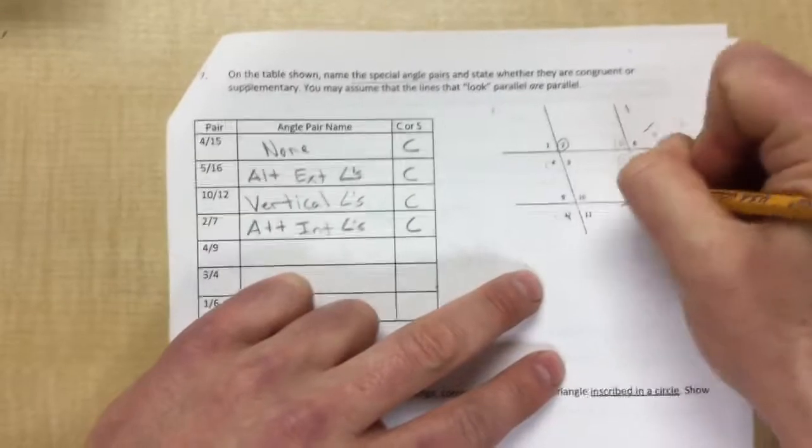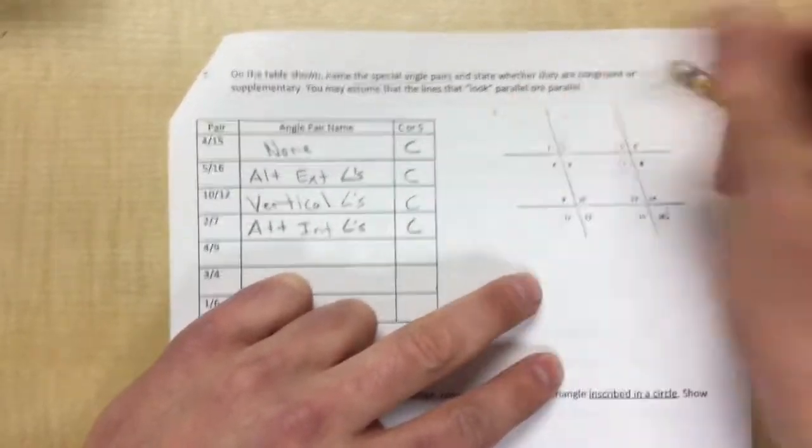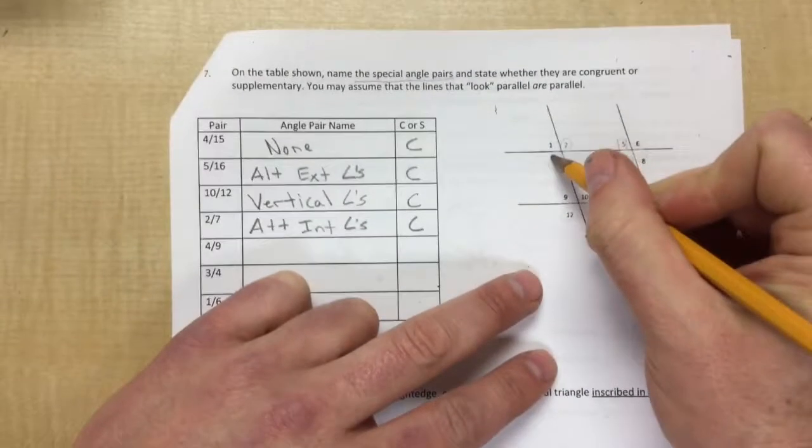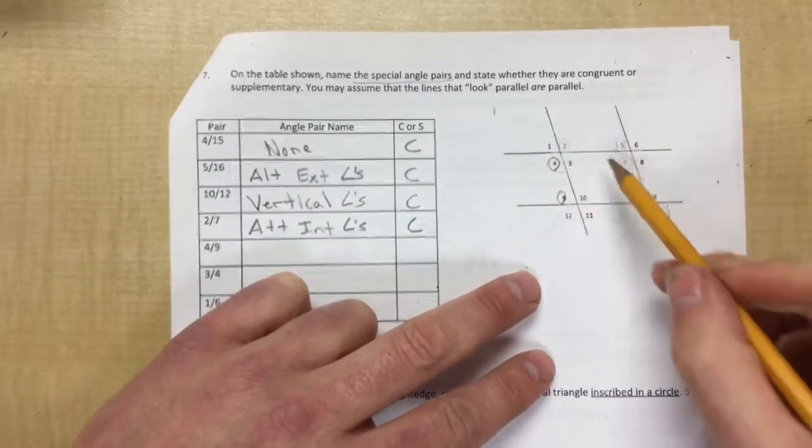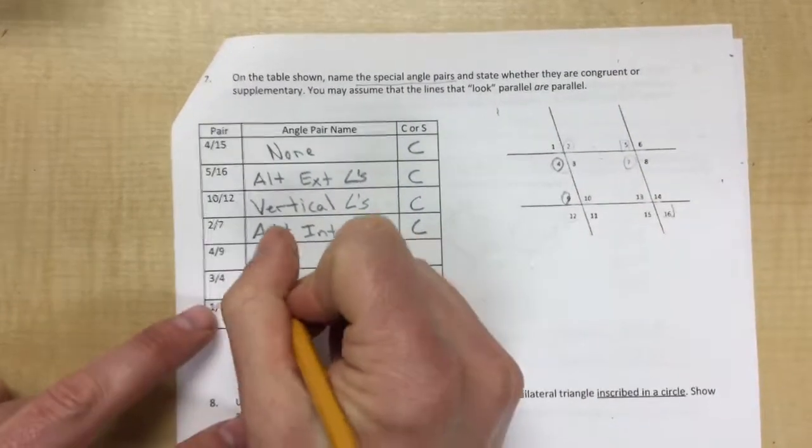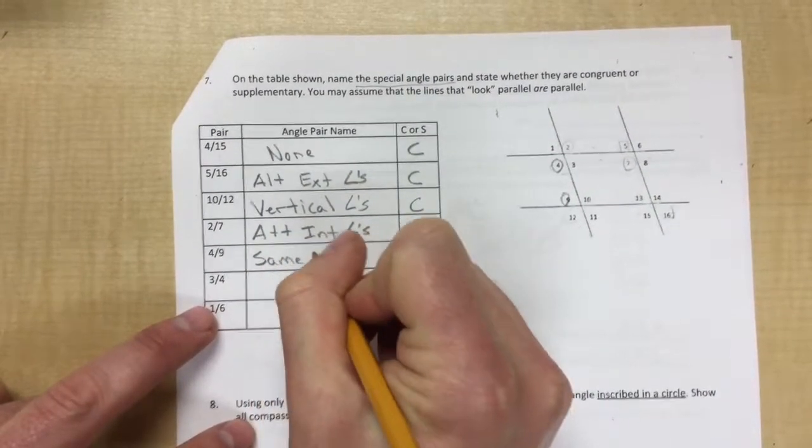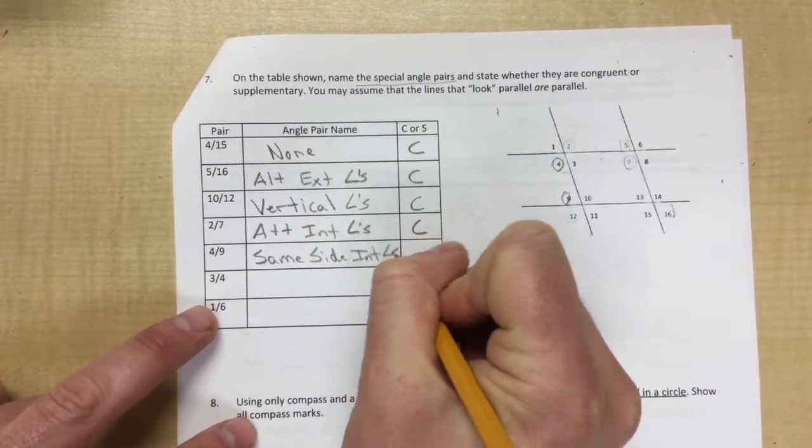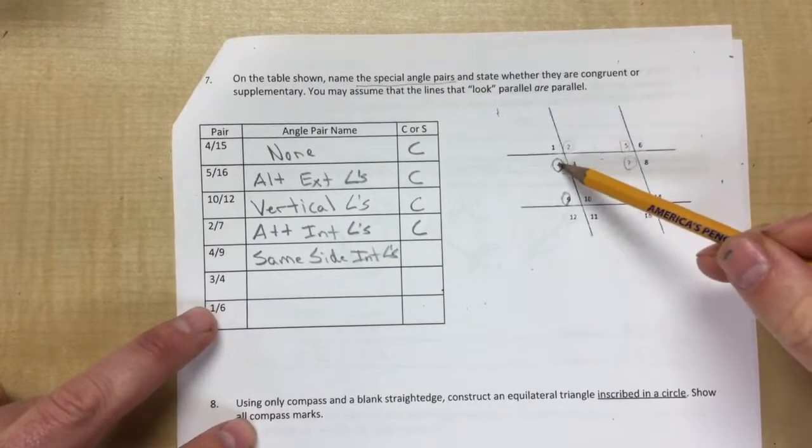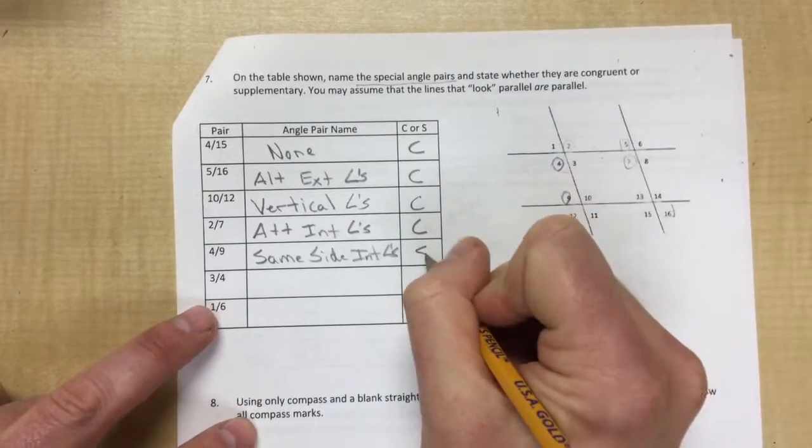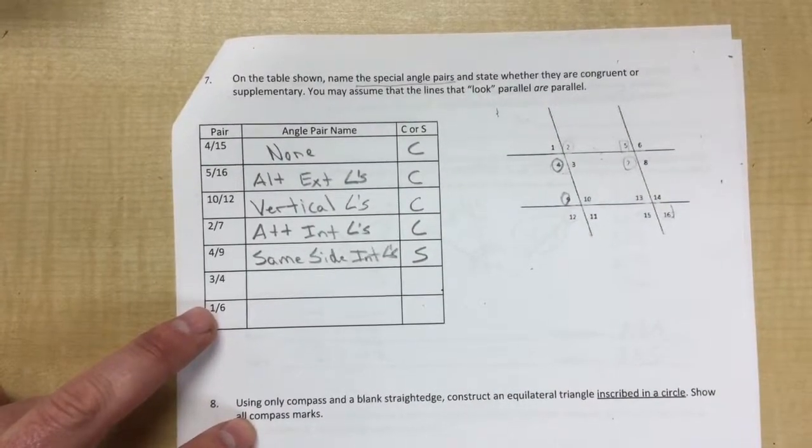Okay. Four and nine. Okay. So for four and nine, we have these two. They are on the inside of these two parallel lines and on the same side. So these are same side interior angles. But four is obtuse and nine is acute. So these ones are supplementary.